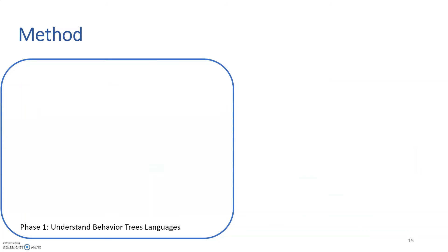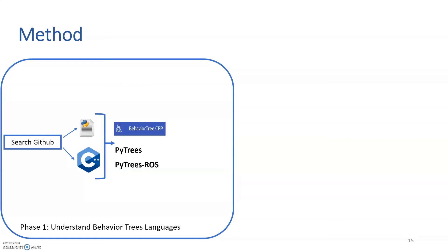Going back to our findings — how did we find these three implementations and the 75 behavior tree robotic models? To achieve our first goal of understanding behavior tree languages, we searched GitHub for behavior tree libraries in Python and C++, the two most used programming languages in robotics. We found multiple implementations, but to ensure relevance for real-world robotic applications, we applied multiple exclusion criteria and ended up with the three implementations: BehaviorTreeCPP, py_trees, and py_trees_ros.